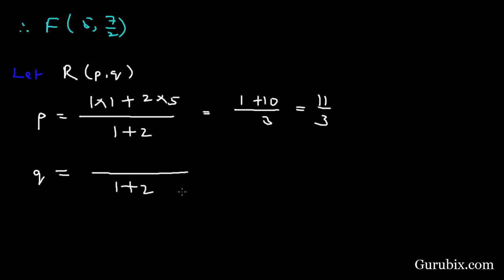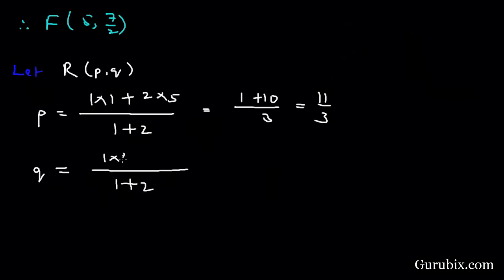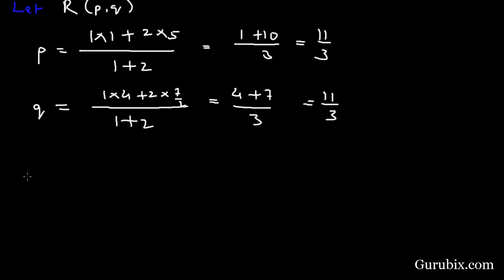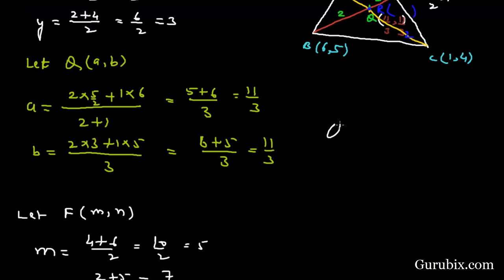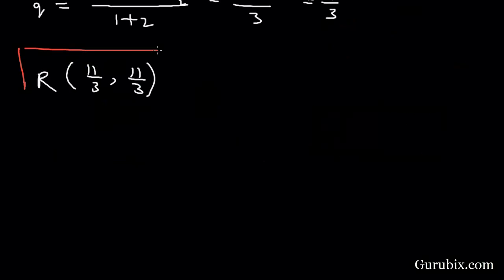The q-coordinate will be (2 × 7/2 + 1 × 4) over (1 + 2), giving 7 + 4 over 3, which is 11 over 3. Therefore the coordinates of R are (11/3, 11/3), and the coordinates of Q are also (11/3, 11/3). So this is the solution of the question. Thank you.